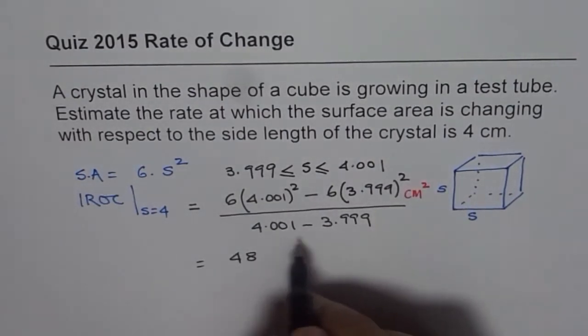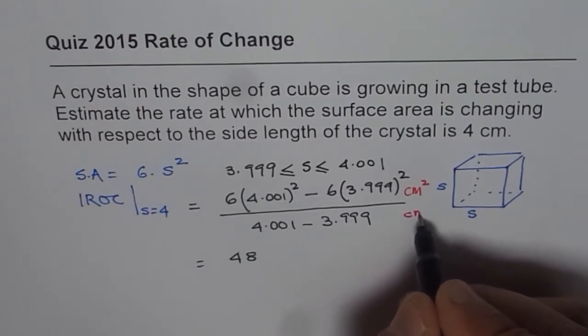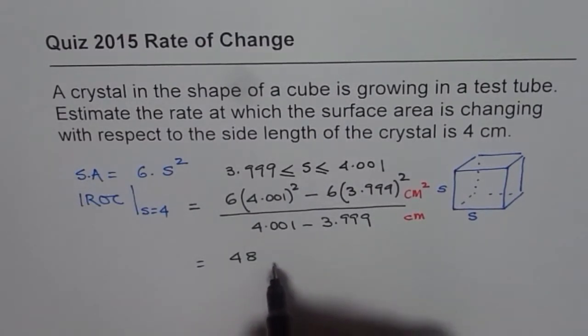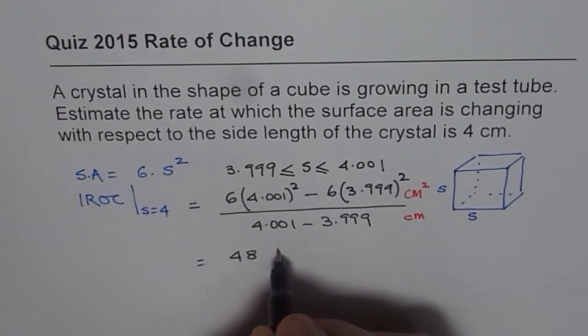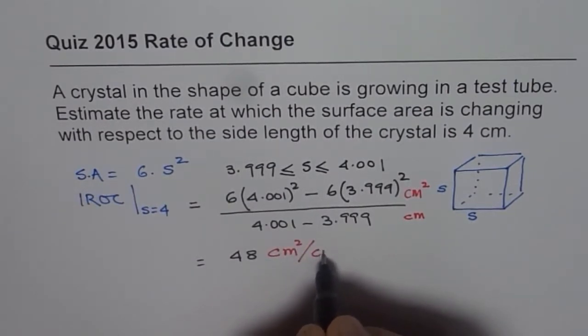How about the denominator? It is a side length which is centimeter. And therefore in this answer you should add the units which is centimeter square over centimeter.